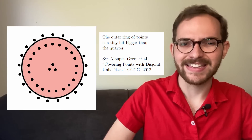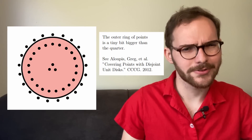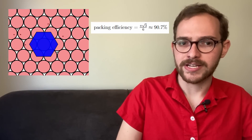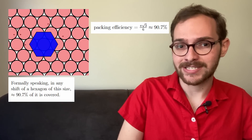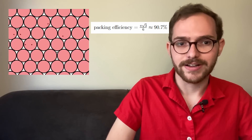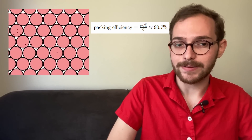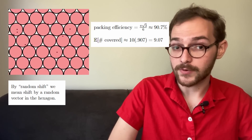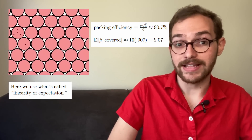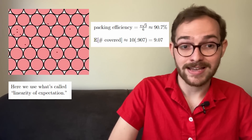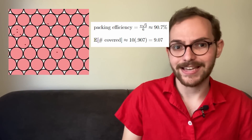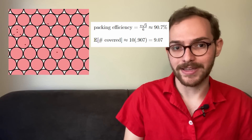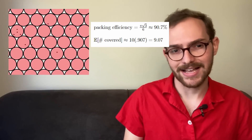This problem is hard — until you know the trick. If you arrange the disks in a hexagonal pattern, they cover about 90.7% of the plane. By itself, this pattern isn't enough, because some points might still be in the gaps. Here's the trick: if we shift the pattern at random, then the expected number of points we cover is 9.07. Then some shift has to cover all 10 points, or else the expected number couldn't be over 9. I don't know how to find that shift, but some shift has to work.